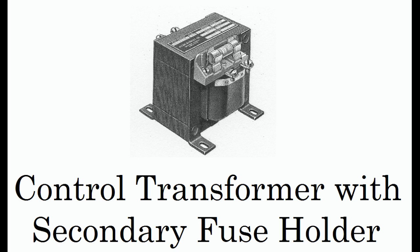Notice that the transformer has two primary windings. These are usually each rated at 240 VAC. By connecting them in parallel, we obtain a 240 VAC primary, and by connecting them in series, we have a 480 VAC primary.